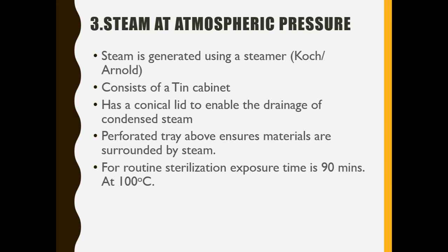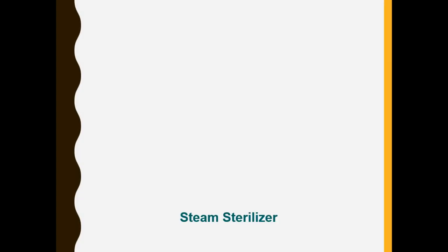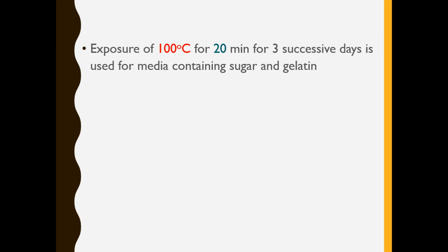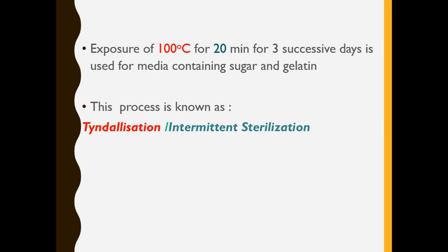We know that water boils at 100 degree centigrade at atmospheric pressure, and for that purpose you use the temperature 100 degree centigrade for 90 minutes. But under the same instrument you can perform one more method. Under this steam sterilizer — as you can see here, the instrument has a conical lid — you can use the temperature 100 degree centigrade for 20 minutes for 3 successive days. It is used for media containing sugar and gelatin. This process is known as Tyndallization, also referred to as intermittent sterilization.